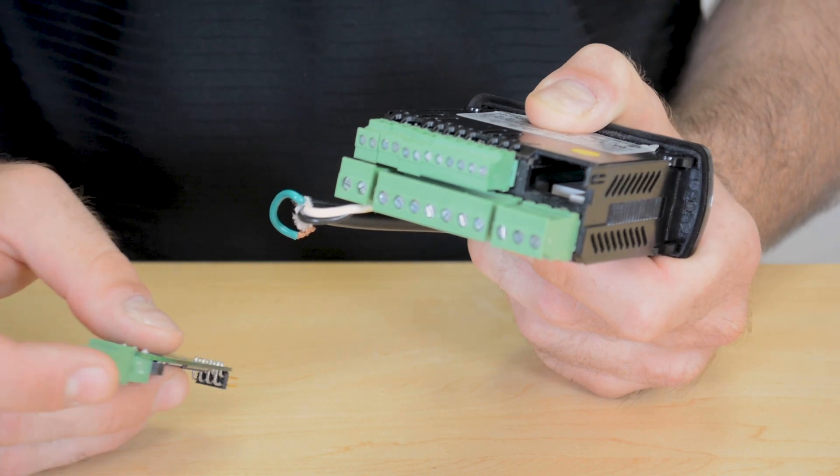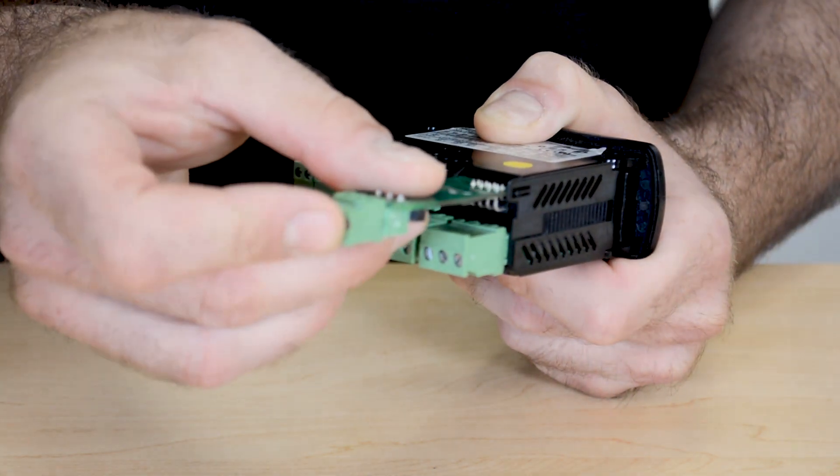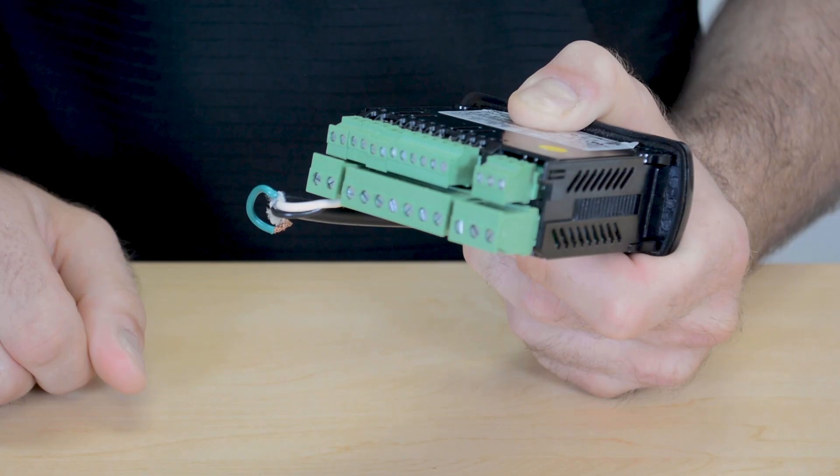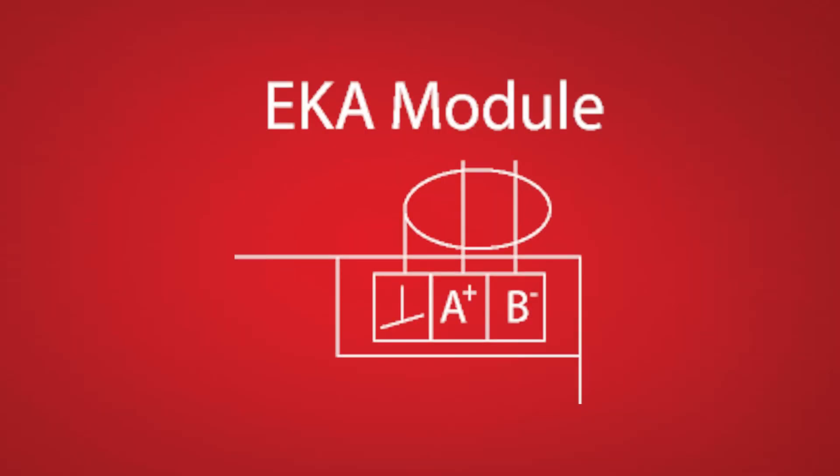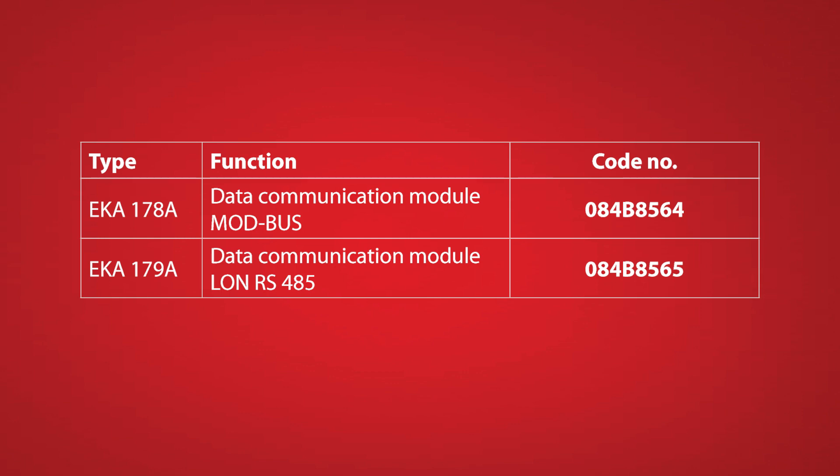An external communication card can be inserted into the 210 after your 210 is powered off. This will give you communication capabilities with an A, B, and a shield. The communication card can be either a Modbus or a LAN RS-485 which would be ordered using the part numbers that are on your screen.